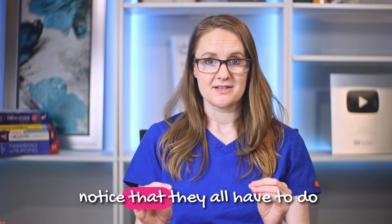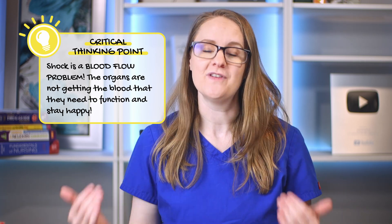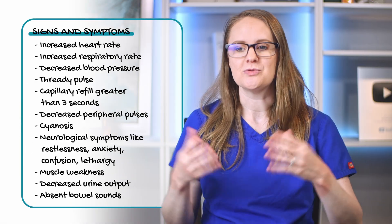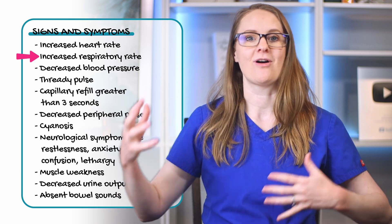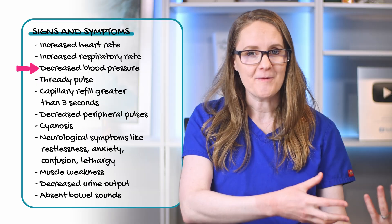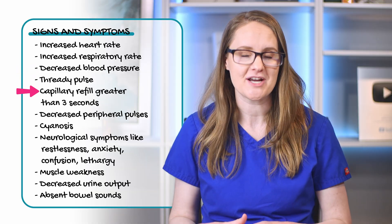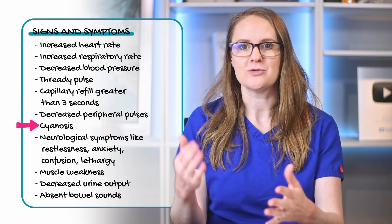Looking at this list, they all relate to reduced blood flow to the body — shock is a blood flow problem. When organs aren't getting enough blood, they send signals to the brain, which tells the heart to pump faster and the lungs to breathe faster to get more oxygen flowing. Blood pressure drops because the heart can't pump out as much blood. Pulses will be thready, capillary refill time will be longer, peripheral pulses will be diminished, and cyanosis can occur — all because of that lack of blood flow.